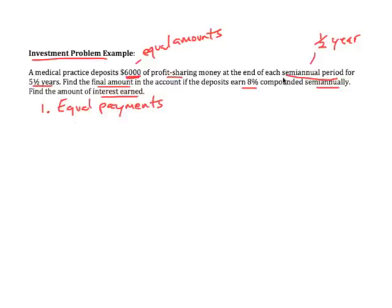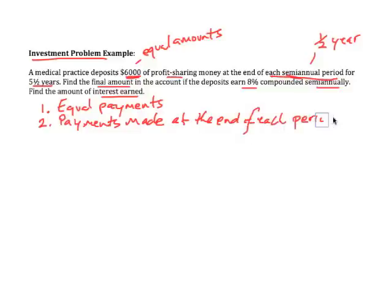They're doing this at the end of each semiannual period. So if they're made at the end, let's put that down. Number two: the payments are made at the end of each period, and of course the period there is semiannual. Now these two pieces of information here are enough to identify the kind of problem this is. This is an annuity problem.